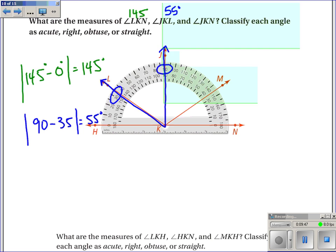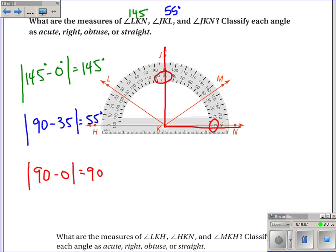And the last one, angle JKN. I have zero degrees, I will use the inside, and I have 90. 90 minus zero is 90 degrees. Classify each angle as acute, right, obtuse, or straight. Well, 145 is between 90 and 180, so it must be obtuse. Angle JKL is less than 90, so it must be acute. And angle JKN is equal to 90, so it must be right.